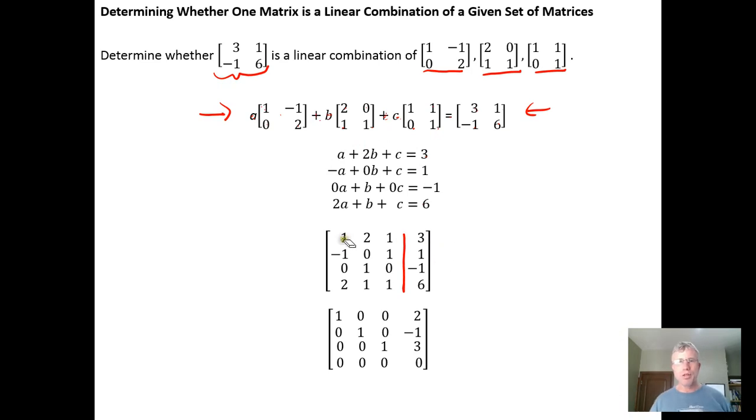We can either solve this by hand, which isn't too difficult, or we can put it into a computer algebra system. Putting this into, for example, GeoGebra Classic 5 and putting it into reduced row echelon form yields this result right here.